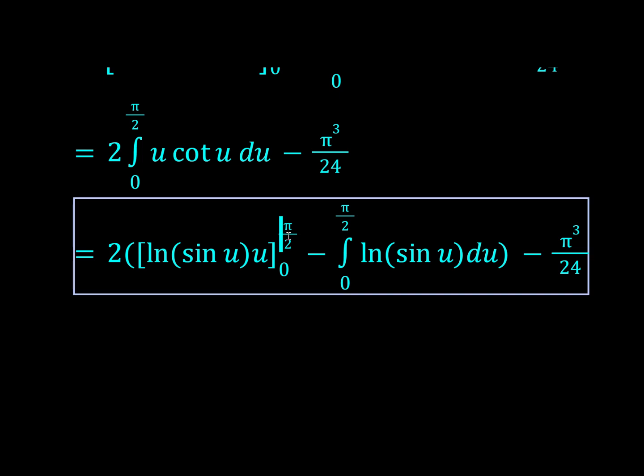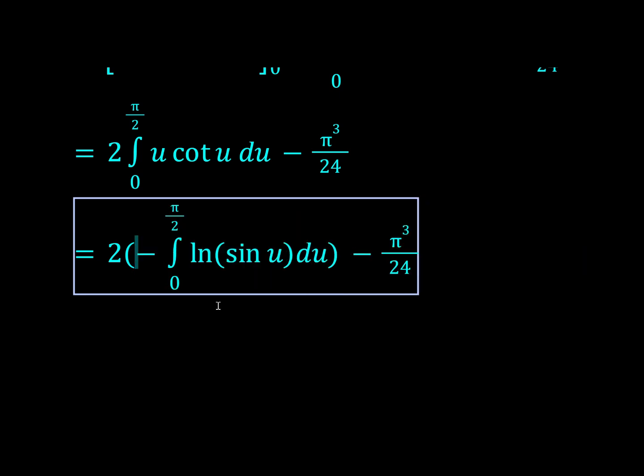We sub in pi over 2 into here, we'll get log sin pi over 2, which will be log of 1, which is 0. And when we sub in 0, we're probably also just going to get 0 by L'Hopital's rule somewhere. So yeah, I'm kind of just skipping the steps because I don't want to evaluate limits today.